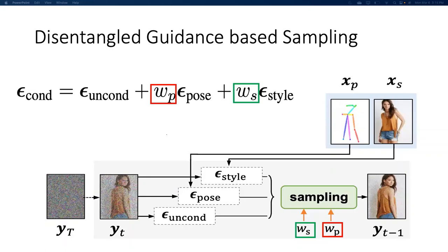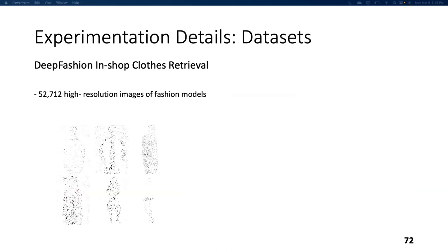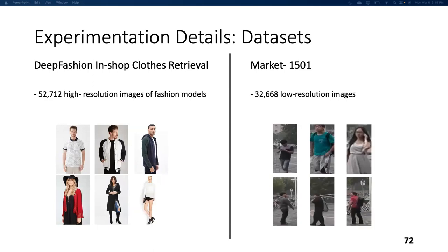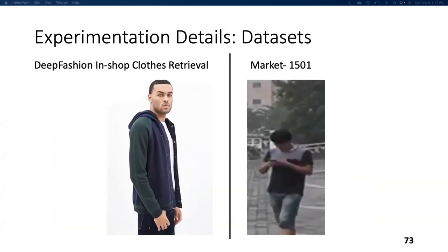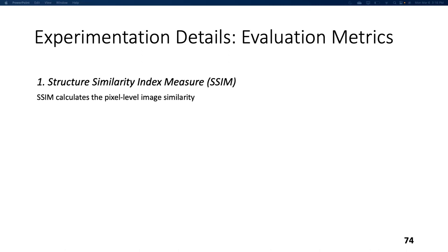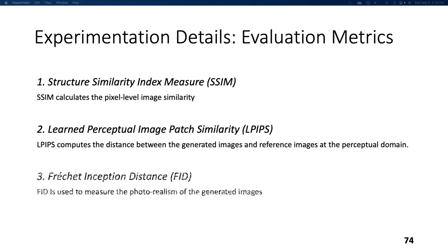Let's look at the experimentation details, starting with the datasets. The first dataset is Deep Fashion In-Shop Clothes Retrieval, consisting of more than 50,000 high-resolution images of fashion models. The second is the Market-1501 dataset, with more than 30,000 low-resolution images. The stark contrast is that Deep Fashion is highly curated with high-quality images, while Market-1501 is low-quality and varies in illumination, background, and viewpoint. The authors use three evaluation metrics: SSIM for pixel-level image similarity, LPIPS for distance between generated and reference images, and FID for measuring photorealism.